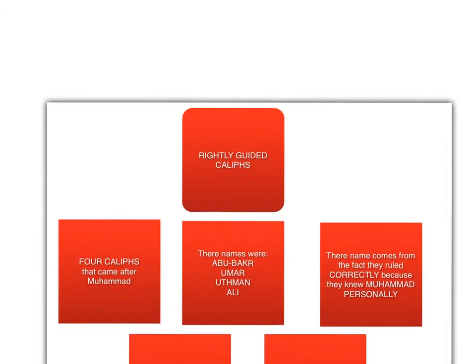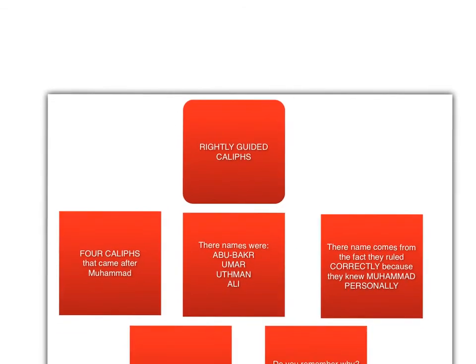The first one was Abu Bakr, as you can see here on the slide. The second one was Umar, the third one was Uthman, and the fourth one was Ali. They all ruled from the period of time 632 until 661.